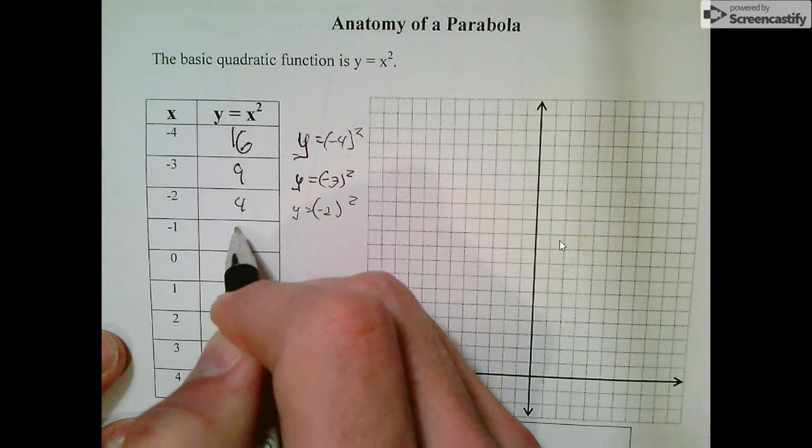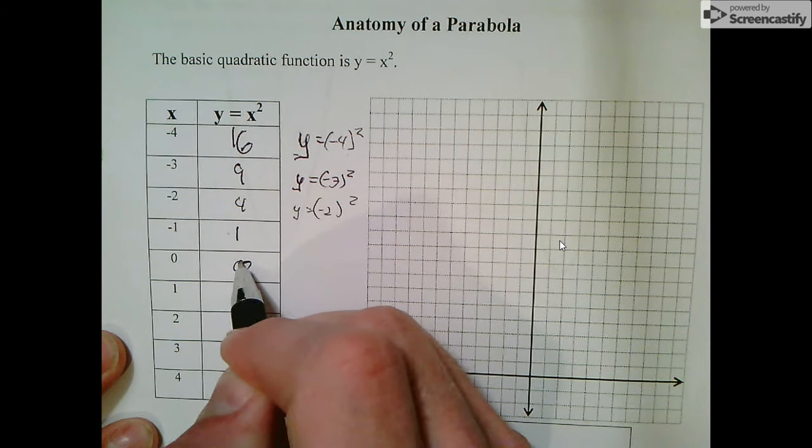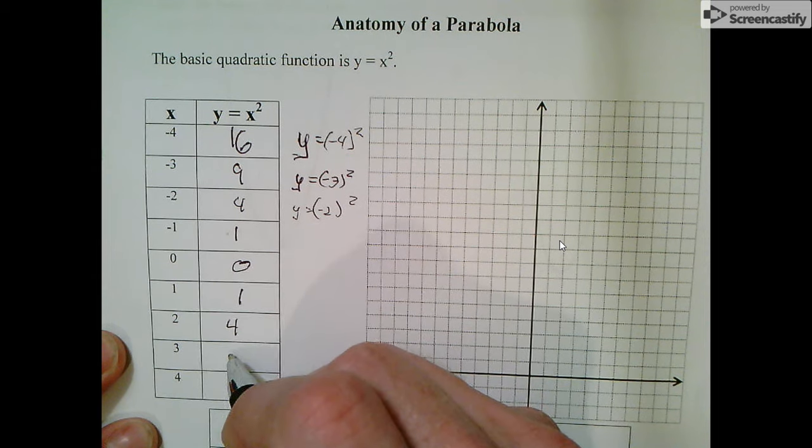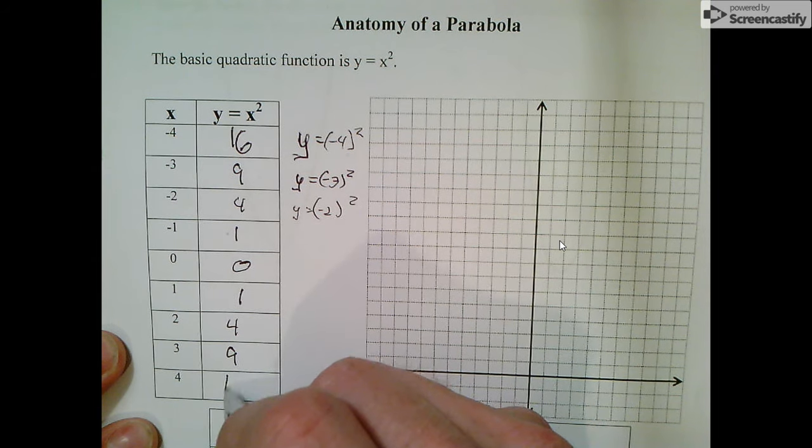Negative 1 times negative 1 is 1, 0 times 0 is 0, 1 times 1 is 1, 2 times 2 is 4, 3 times 3 is 9, and 4 times 4 is 16.